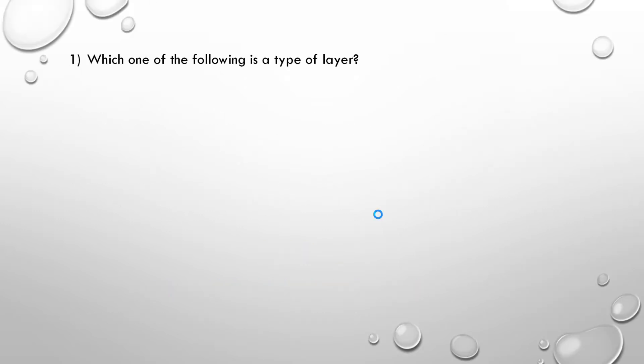And here first question is, which of the following is a type of layer? A. Timebar. B. Gradient. C. Palette. D. Animate edit mode. Correct answer is gradient.